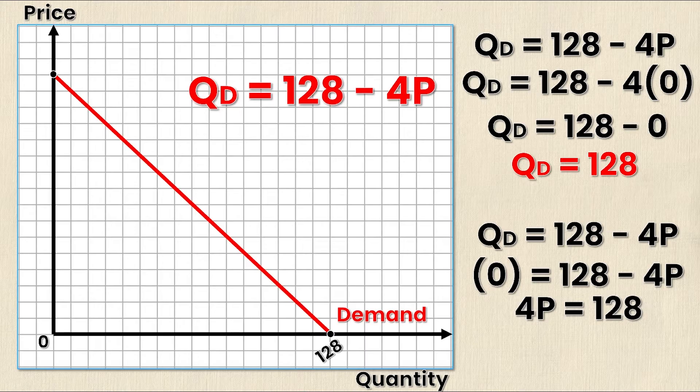Rearranging I'll get 4P = 128 and then of course I need to get P all by itself so I'm going to divide both sides of the equal sign by 4. This yields me a value of 32 for P and then I can go ahead and sub this in on my graph as well.